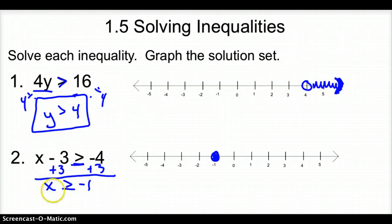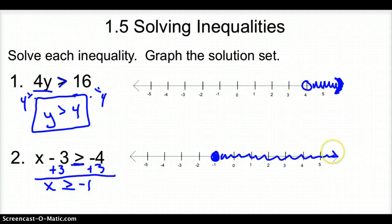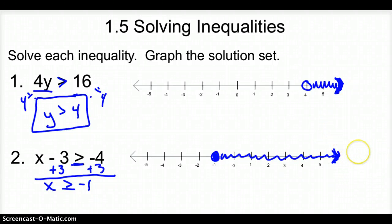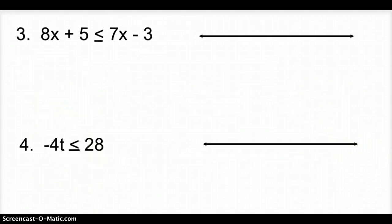x is greater than or equal to negative 1, so since it's greater than I shade to the right. I like to fill in my arrows so you know it keeps going on and on forever.